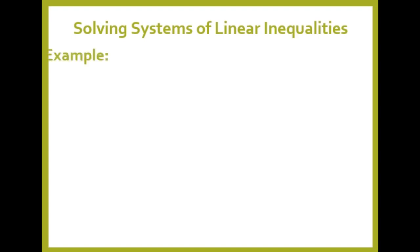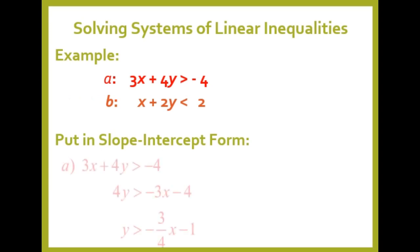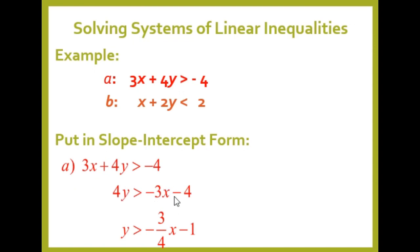Let's take an example. First inequality: 3x + 4y > −4. Second inequality: x + 2y < 2. We need to put them in slope-intercept form. For the first inequality, isolate y by transposing 3x to the right side: 4y > −3x − 4. Dividing both sides by 4 gives y > −(3/4)x − 1.